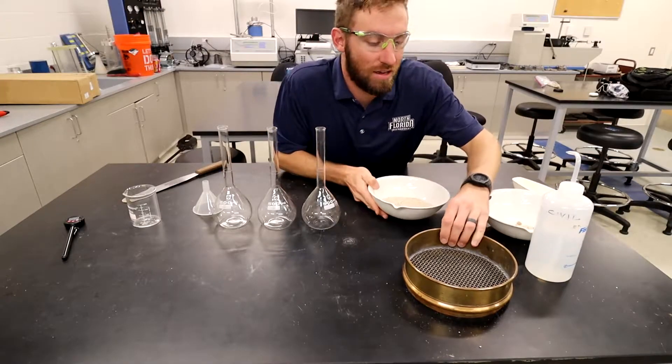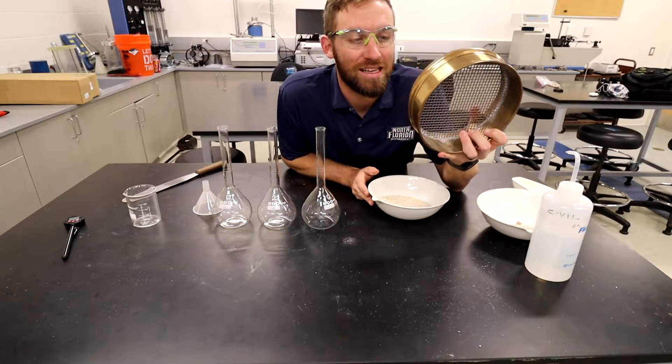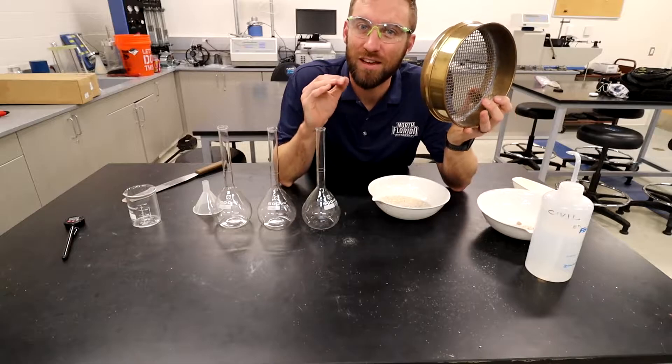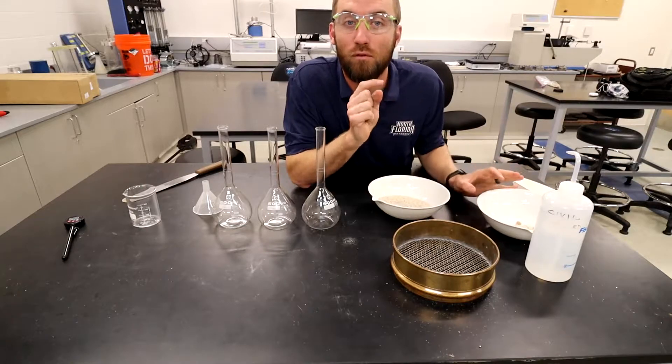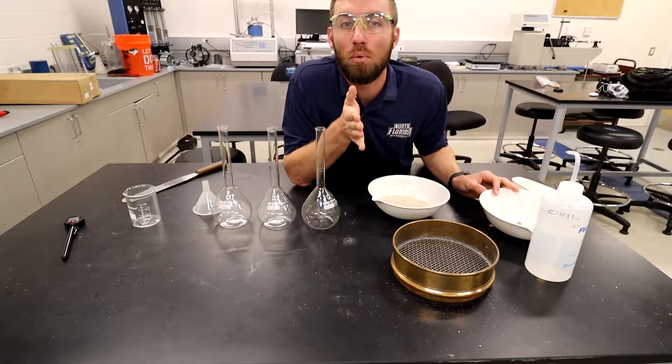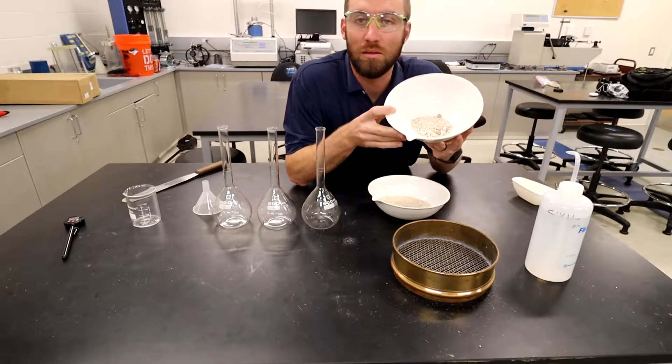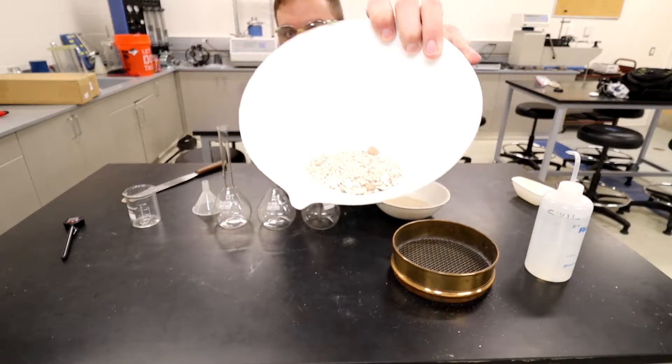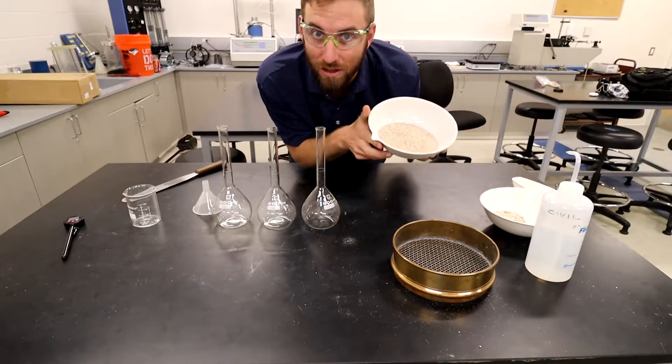We also need to use a number four sieve. We haven't gone over what sieves are yet but they're pretty much just filters that will filter out specific sizes of grains. The number four sieve means all particles greater than 4.75 millimeters in diameter are going to be filtered out. We can toss those out and we have this sample that we're going to be using.